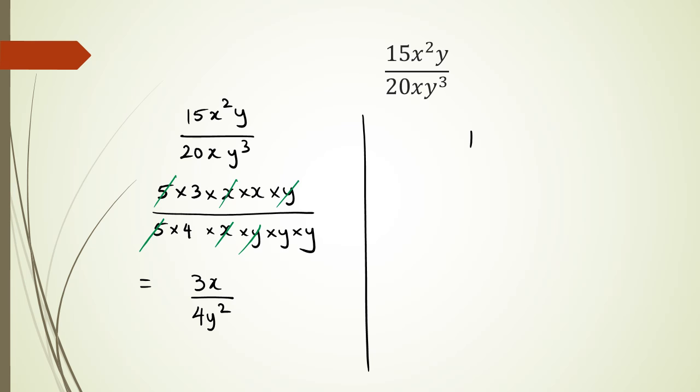So if I was to do this the shorthand way, is I do it this way. So I look at 15, and I go, all right, 15 divided by 5 is 3. 20 divided by 5 is 4.